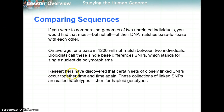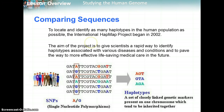Comparing sequences: if you compare the genomes of two unrelated individuals, you find that most but not all of their DNA matches. On average, about one base in every 1,200 will not match, and these are called SNPs — single nucleotide polymorphisms. Researchers have discovered that certain sets of closely linked SNPs occur together time and time again. These collections are called haplotypes, short for haploid genotypes. For a certain segment of DNA, most of it is the same between people, but in one person you might have an A, a G, and a T in certain positions, and in another person a different combination.